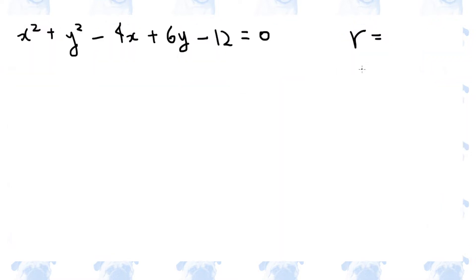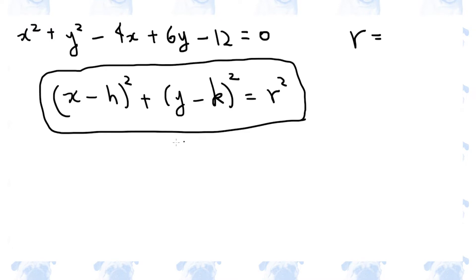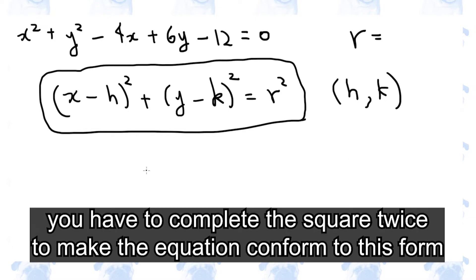In this question, we need to find the radius of the circle represented by this equation. First of all, remember the general form of a circle. This is the equation of a circle with h, k as the coordinate of the center, and r as the radius. So we basically need to complete the square to create these squared brackets.